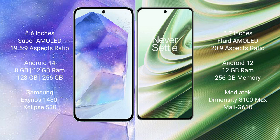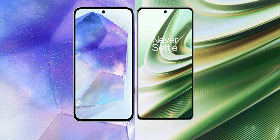Samsung Galaxy A55 comes with 8GB or 12GB RAM and 128GB or 256GB internal storage, with an Exynos 1480 processor and GPU Xclipse 530 chipset. OnePlus 10R comes with 12GB RAM and 256GB internal storage, a MediaTek Dimensity 8100 Max processor, and GPU Mali-G610.